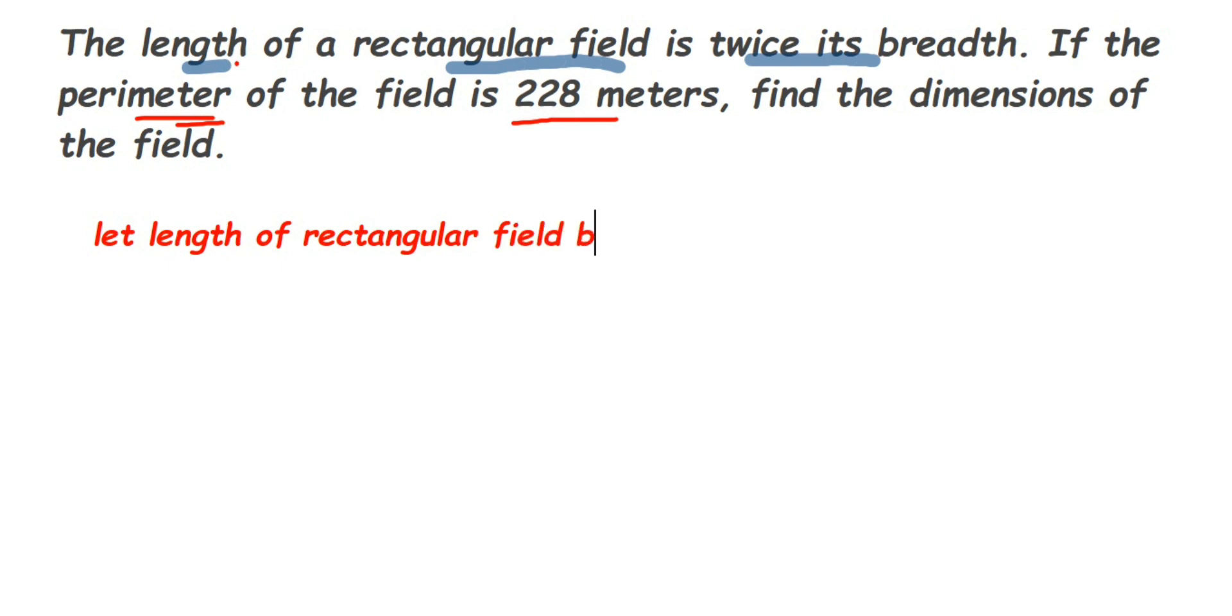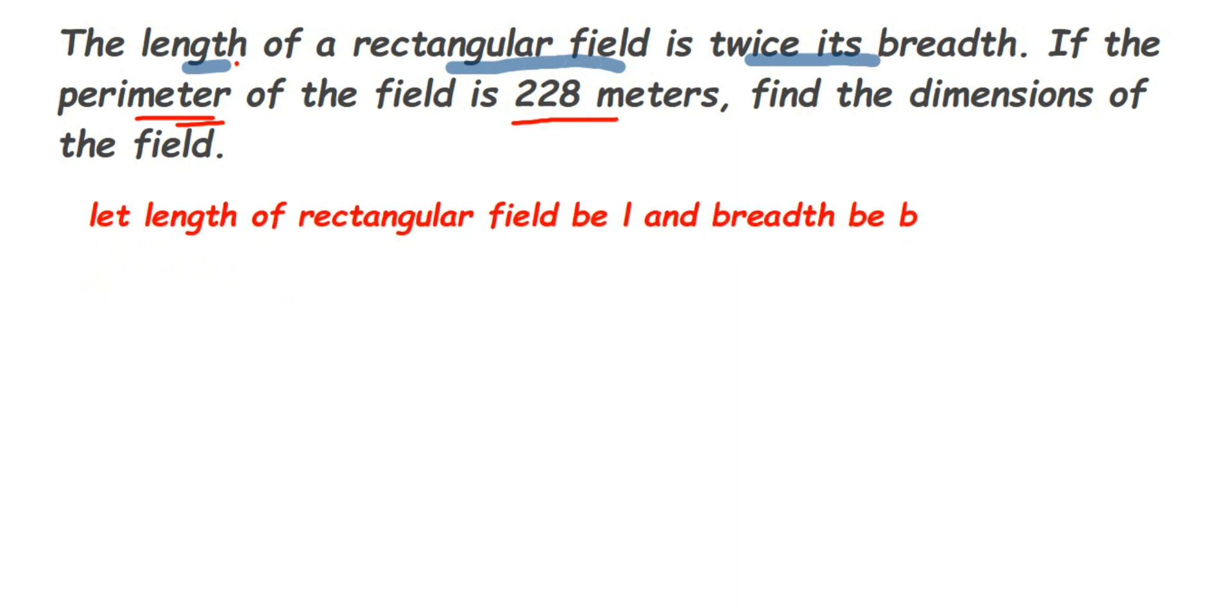And breadth be B. So here we have to first make the relationship between L and B. From the question we can write down that L is equal to 2B. And they have also given the perimeter is 228, so given P is equal to 228.